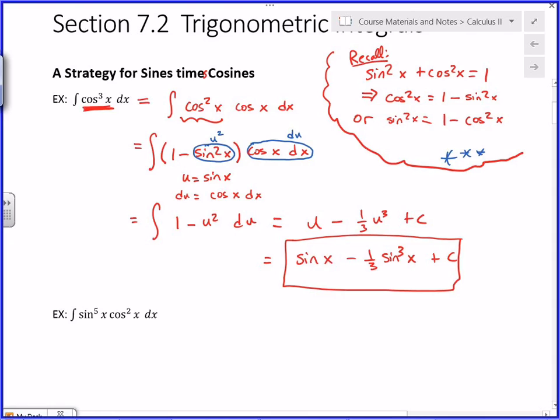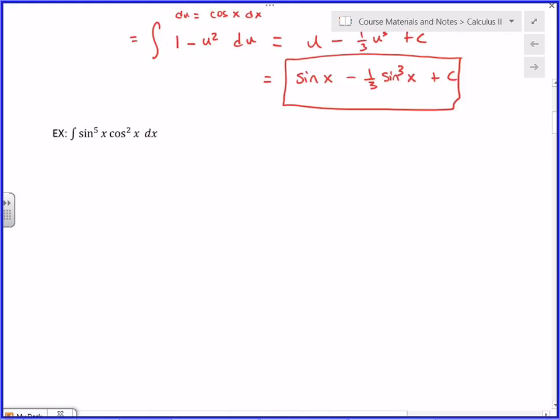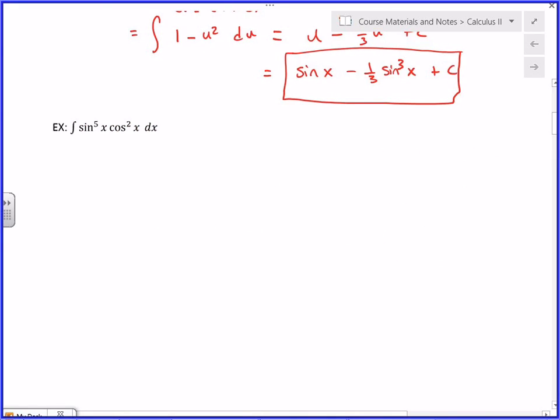So again, if there's an odd number of them, split one off, write the rest of the integrand in terms of the other trig function, and then use substitution. Let's see if we can't do that same step here. You help me walk through this. Which one would you split off?